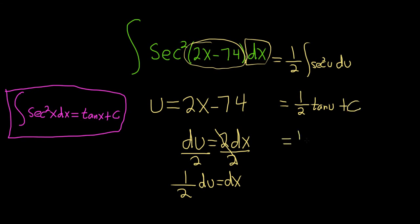The last thing to do is replace u with what it actually is. So it'll be 1 half tangent of 2x minus 74. And then we have our plus capital C. And that would be the final answer.